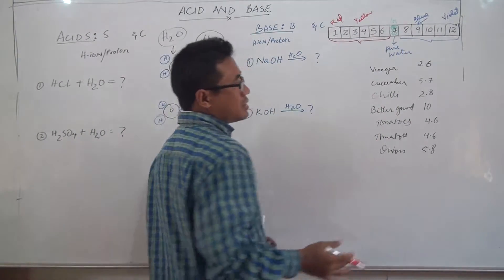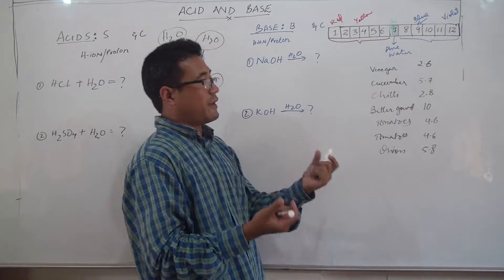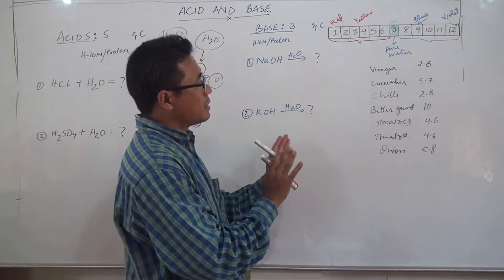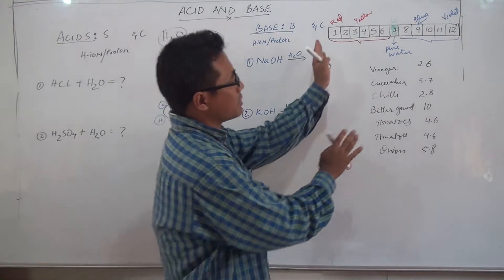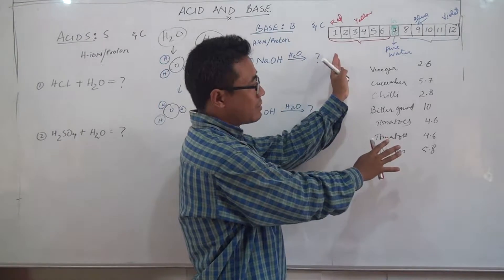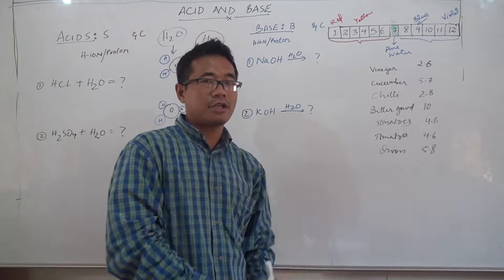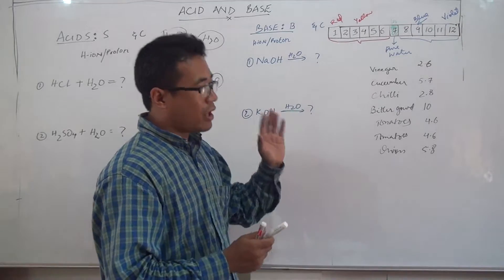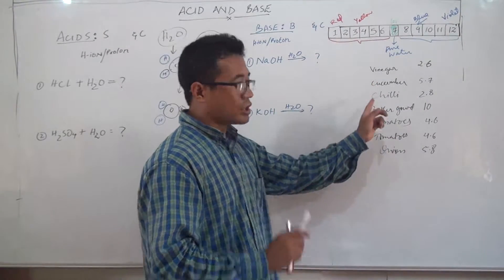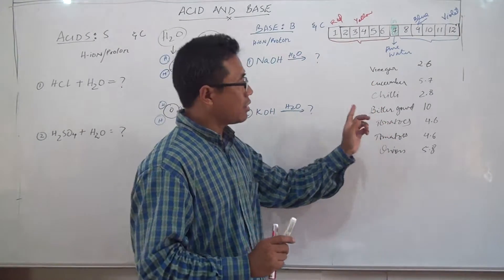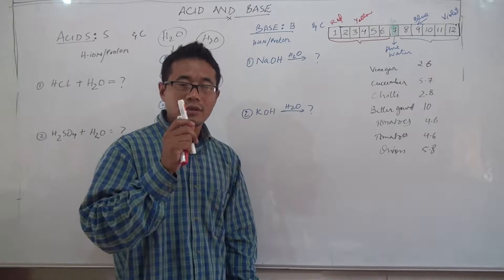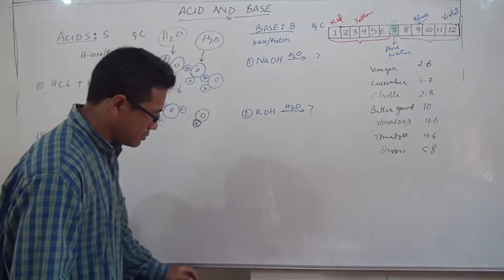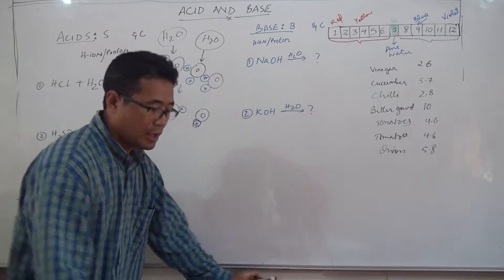You can also find out acidity or basicity using what we call litmus paper, which we will do a little later. Keep in mind: when you go to a doctor and you are sick, the doctor will tell you to eat foods that are not too acidic — like cucumber. They will not recommend chili or bitter gourd. Those are the foods doctors recommend avoiding.